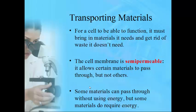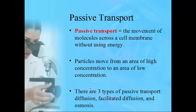Some materials can get into and out of the cell without using any energy at all, but some things do need energy. That covers two different types of transport. Passive transport is the movement of molecules across the cell membrane without using energy. Particles move from an area of high concentration to an area of low concentration — this is called going down a concentration gradient, like rolling a ball downhill.